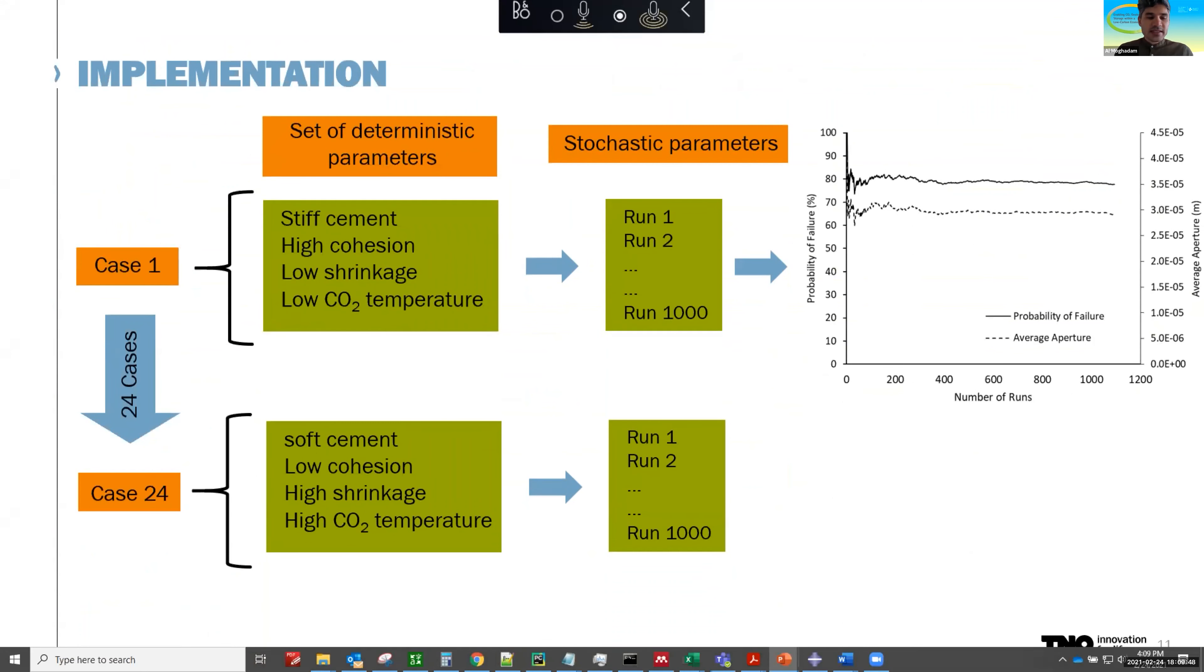Now the way we implement this, for example, for case one through 24, the first case, we select the deterministic parameters that we want. And for that, we run 1000 simulations, and for each of those, a new set of stochastic parameters. So here we have a large amount of data, we need to understand, we need to think about how to process it.